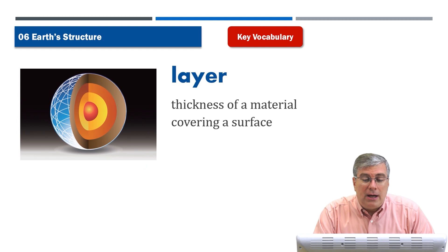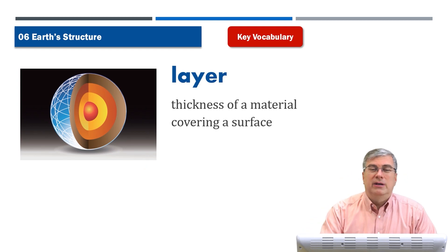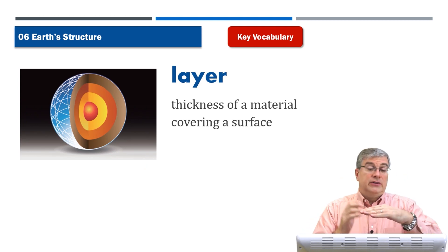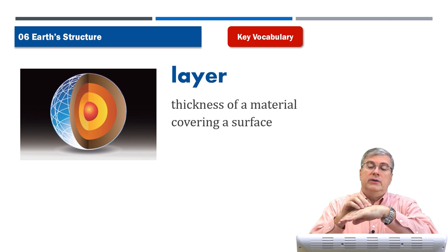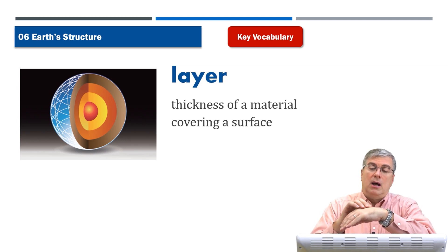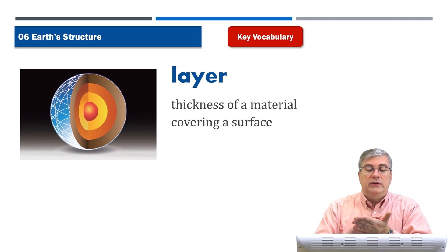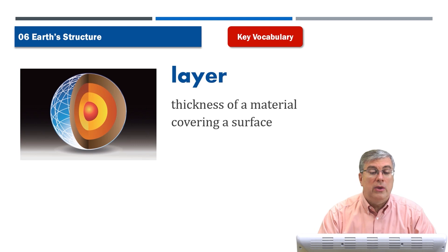Layer. Now, a layer is a thickness of a material covering a surface. So think about your hand. There is a layer of skin on your hand, and the skin covers the entire surface of your hand. So skin is a layer. It's a thickness, and your skin has certain thickness of a material that covers a surface. So whatever it is, there is a layer of something that covers the surface of another thing. That is what we call the layer.